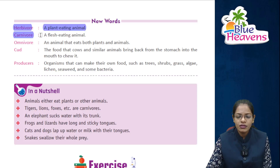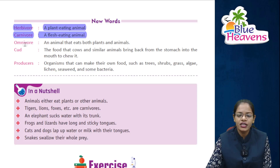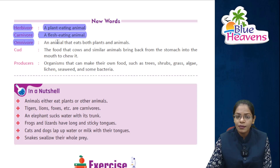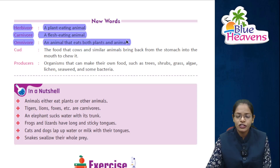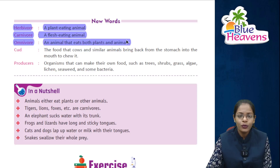Carnivores means a flesh-eating animal. Omnivores means an animal that eats both plants and animals.